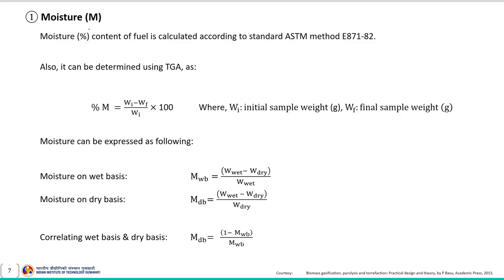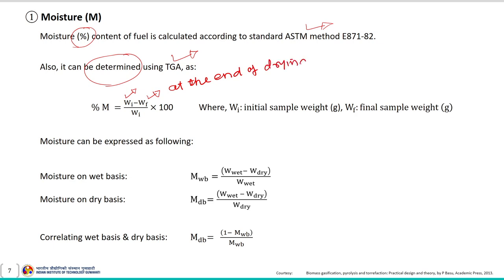After understanding thermo-gravimetric analysis, let us discuss about moisture content and how to estimate it. The percentage moisture content of fuel can be calculated according to the standard ASTM method and can also be determined using TGA analysis. Once we know the initial weight of the sample and the final weight at the end of the drying step, we can easily calculate the percentage moisture content of a fuel.